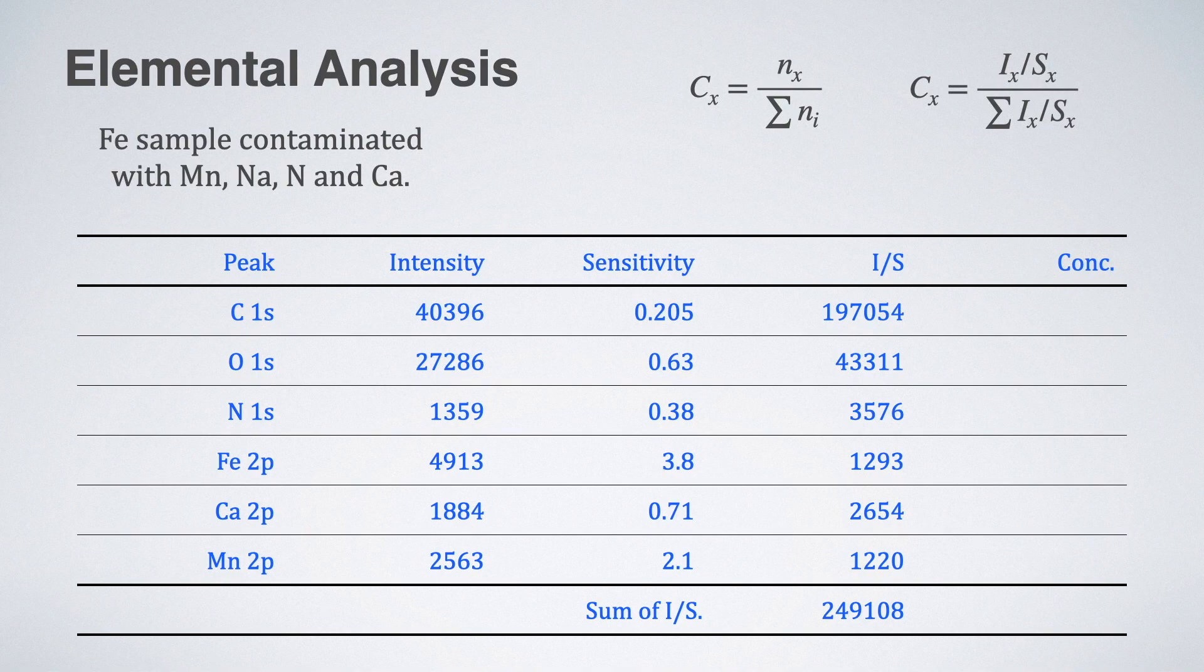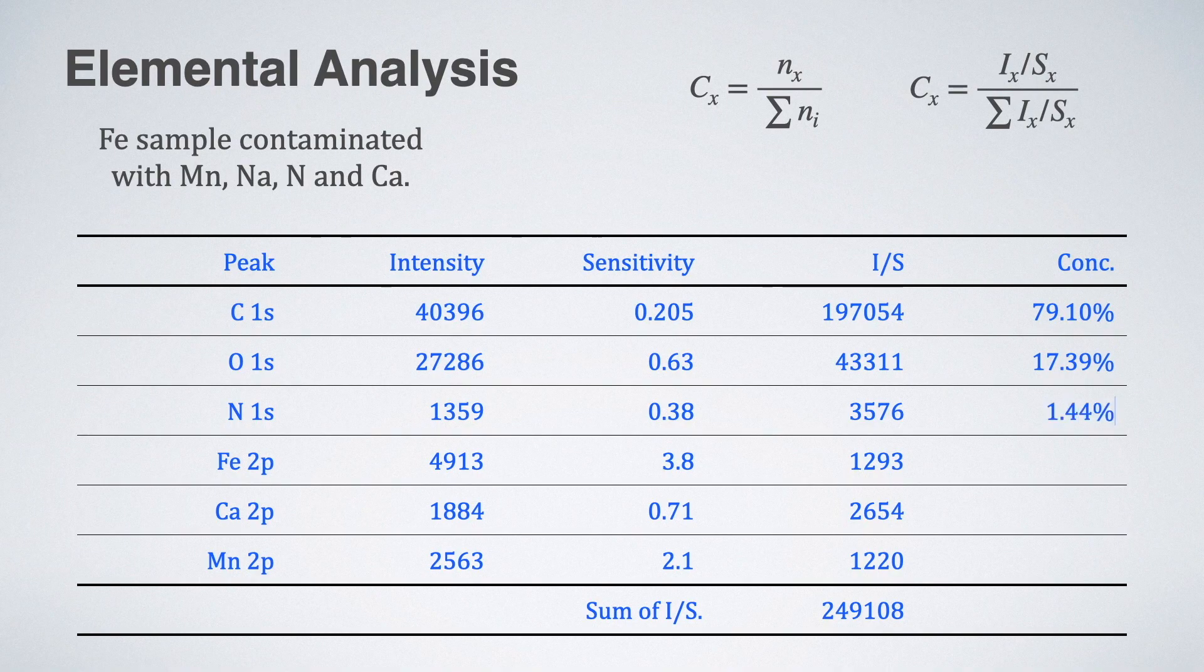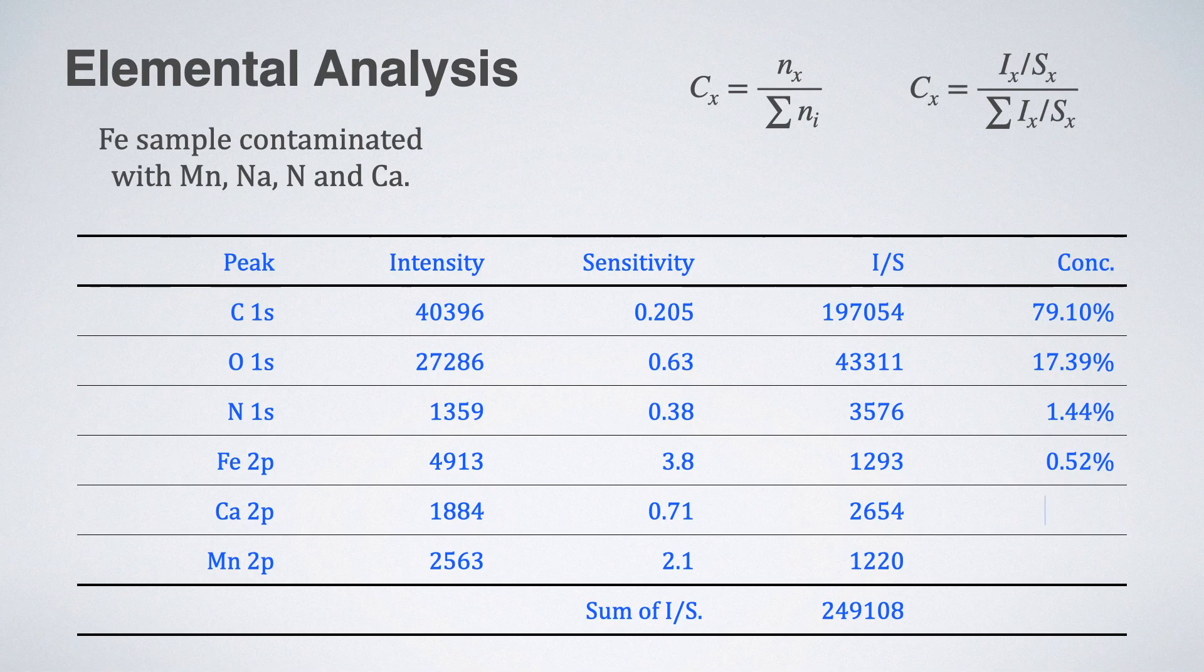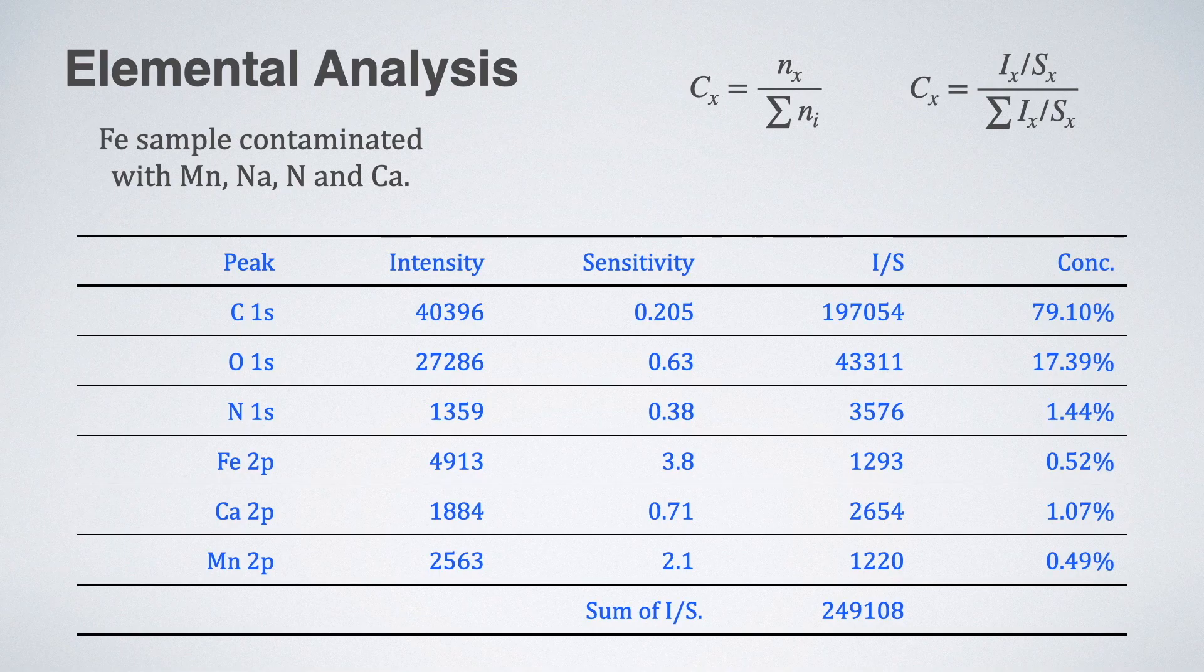So, for carbon 1s, it comes 79.10%. For oxygen, it is 17.39%. Nitrogen, it is 1.44%. Iron, it is 0.52%. Calcium, it is 1.07%. And manganese is 0.49%. This means with simple calculations, we can find the elemental composition of our sample.